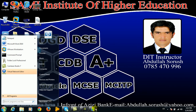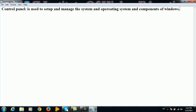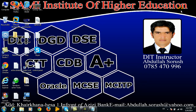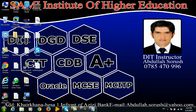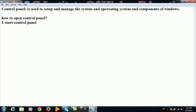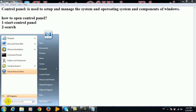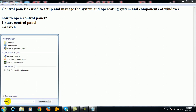To open Control Panel, the first way is to click the Start button and then click Control Panel. The second way is to go to the Start menu and search for Control Panel in the search box.